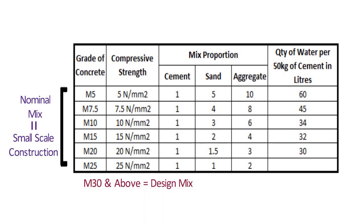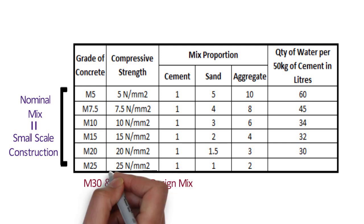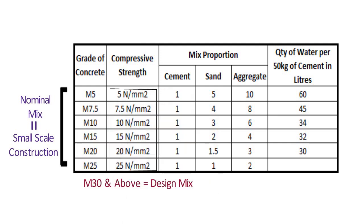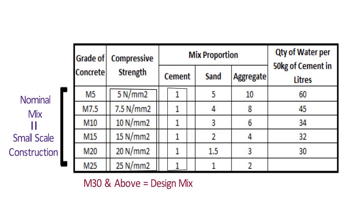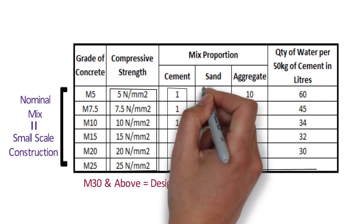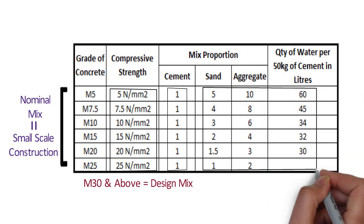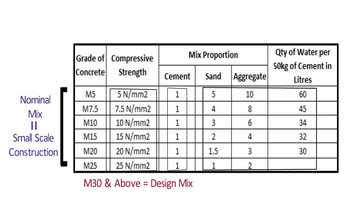As the strength of concrete increases, the cement content is constant in proportion, but sand, aggregate and water content are reducing. So if you add more water to the concrete, the strength of concrete decreases, and vice versa.